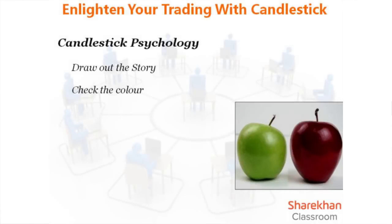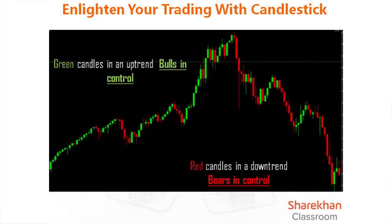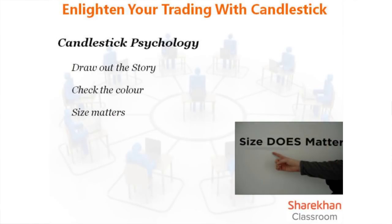Second, check the color - green shows bullishness and red shows bearishness. Looking at a live Nifty chart on our Trade Tiger terminal: when prices are going up, you see many more green candles; when prices are in a downtrend, you see more red candles. Green candles in an uptrend tell you bulls are in control; more red candles when prices are going down tells you sellers or bears are in control.